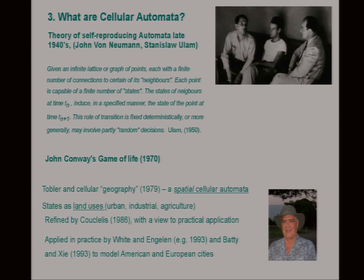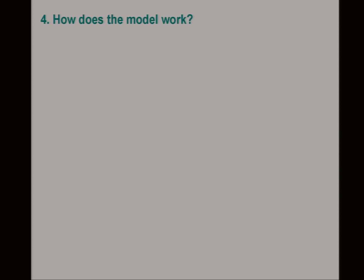The best-known application of cellular automata is probably this by Roger White and Guy Engelen, about 20 years old now, applied inside a major standalone commercial software. So how does this model of Engelen and White actually work? Basically, you start with your initial land use map, which in the case I'm going to talk about today is 1956.